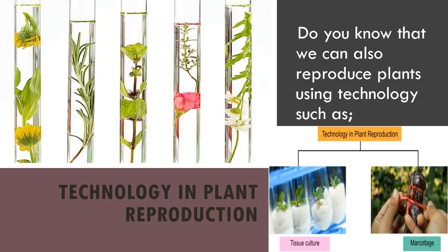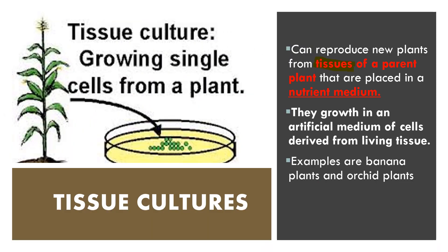Technology can also be used in plant reproduction. Do you know that we can reproduce plants using technology such as tissue culture and marcottage? Tissue culture is the growing of single cells from a plant. This technique can reproduce new plants from the tissue of a parent plant when it is placed in a nutrient medium. The plant will grow in an artificial medium of cells derived from a living tissue. Examples of plants that can be reproduced through tissue culture are banana and also orchid.